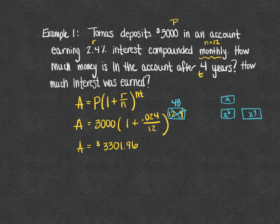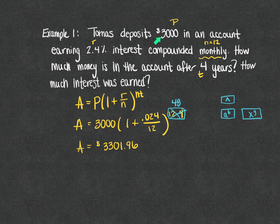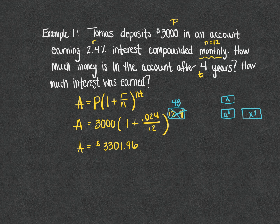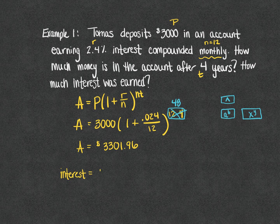The second part of this question says how much interest was earned. Remember that this number here is the total amount of money in the account after four years. $3,000 of that is what Tomas deposited initially. So the difference between the final amount and the starting amount represents the amount of interest that was earned.